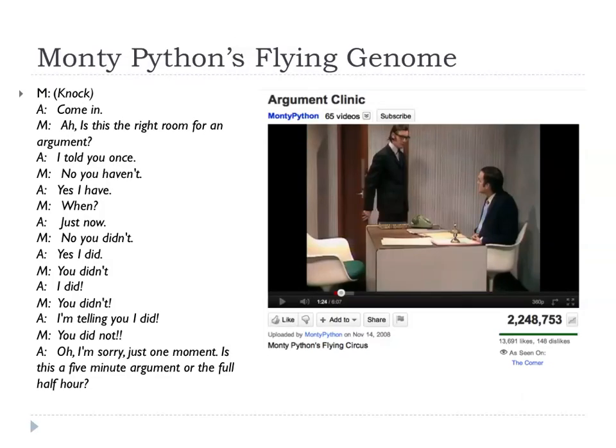There's been a bit of argument about who did what first. I come from the land of Monty Python — I'm not going to get involved in those arguments. If you like arguments, I suggest you look at the Argument Clinic sketch. The key point is that there were four genome efforts, and all of them led to peer-reviewed publications, which I think is the remarkable thing.